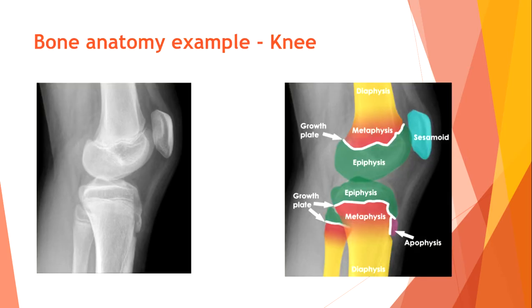Bone anatomy example — knee. The many apophyses in the body have variable appearances and are often mistaken for fractures. Key anatomical zones in a growing bone include: diaphysis, metaphysis, epiphysis, sesamoid bone, and growth plate.